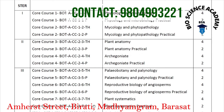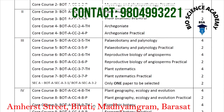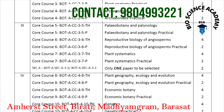In the first semester, only CC1 and CC2 papers are there from the Botany core course. In semester 2, there are CC3 and CC4. In semester 3, there are CC5, CC6, and CC7, along with a SEC paper.